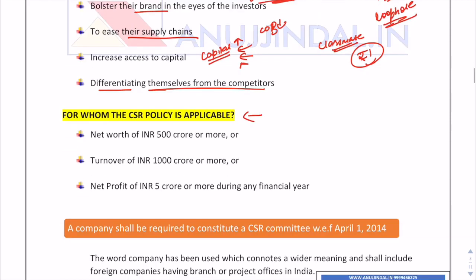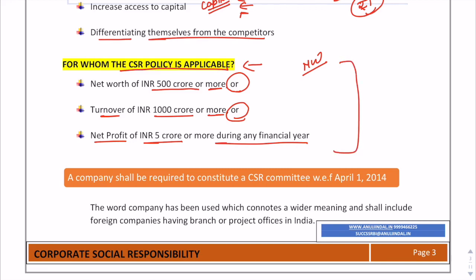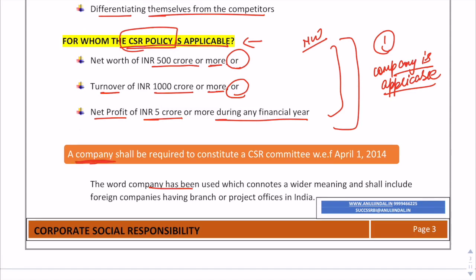For whom is the CSR policy applicable? Any company whose net worth is 500 crores or more, or turnover of 1000 crores or more, or net profit of five crores or more during any financial year. Note the word 'or' — if any one of the three criteria is met, the CSR policy is applicable to that company. It is not necessary to fulfill all three criteria.